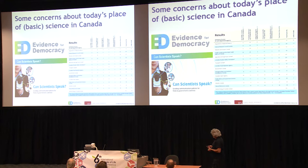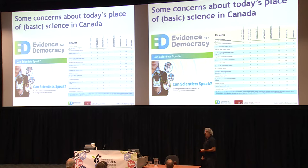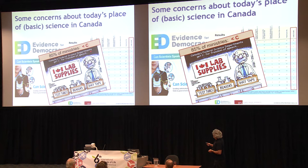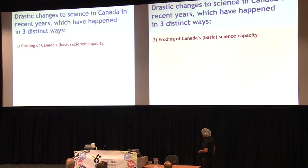Evidence for Democracy evaluated the possibility of scientists in various ministries and government organizations to speak about what they're doing to the public. They graded them A to F, with F being lousy. They found that 85% of the ministries scored below a C in terms of their potential for freedom of speech. Not very good. The second way things have been happening: eroding Canada's basic science capacity.